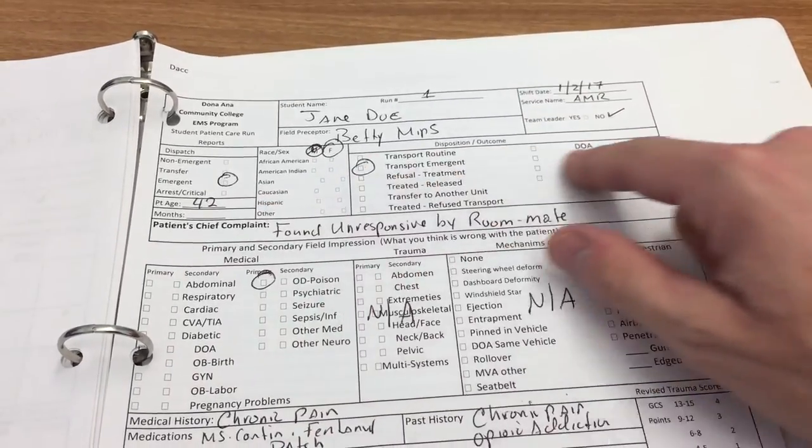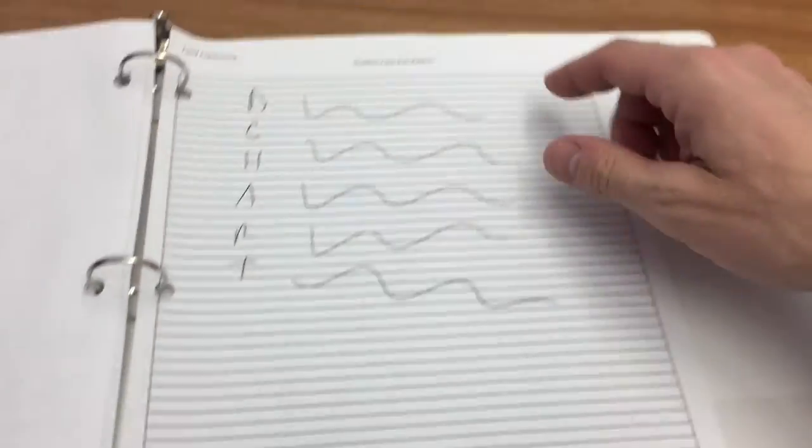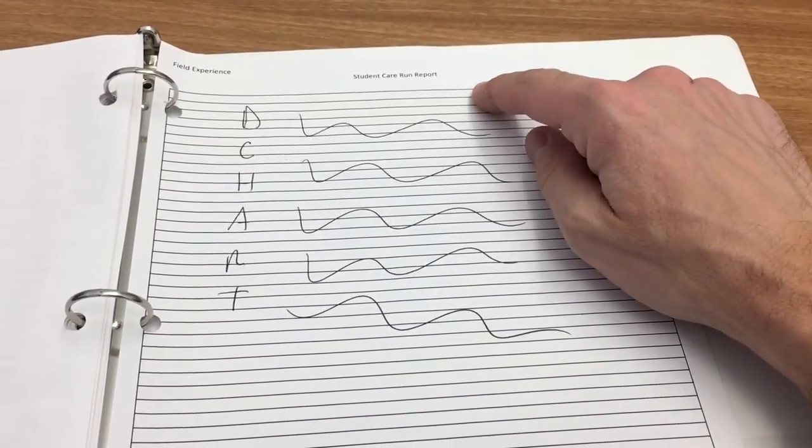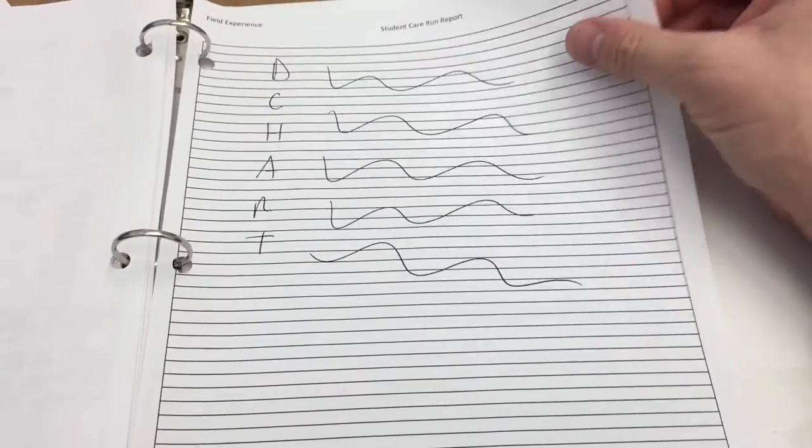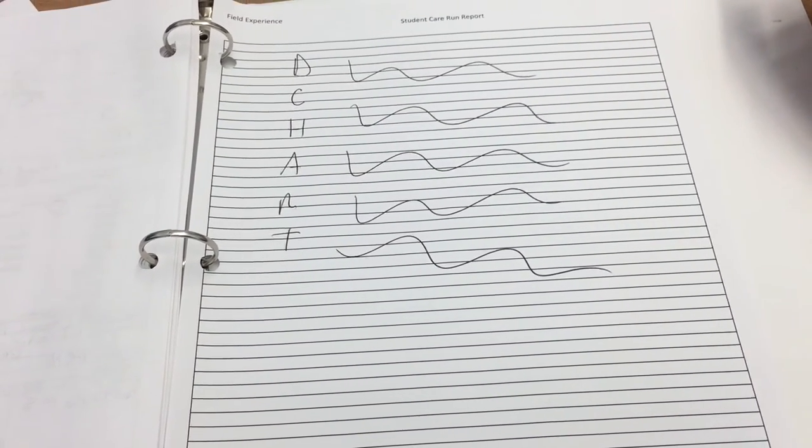And then you just go through it. Fill it out. And you can also do your D chart by attaching additional run report documentation. Likewise, you can also type these run reports out, and you've been given templates, and we've covered that in class how to do that. So hopefully that makes sense.